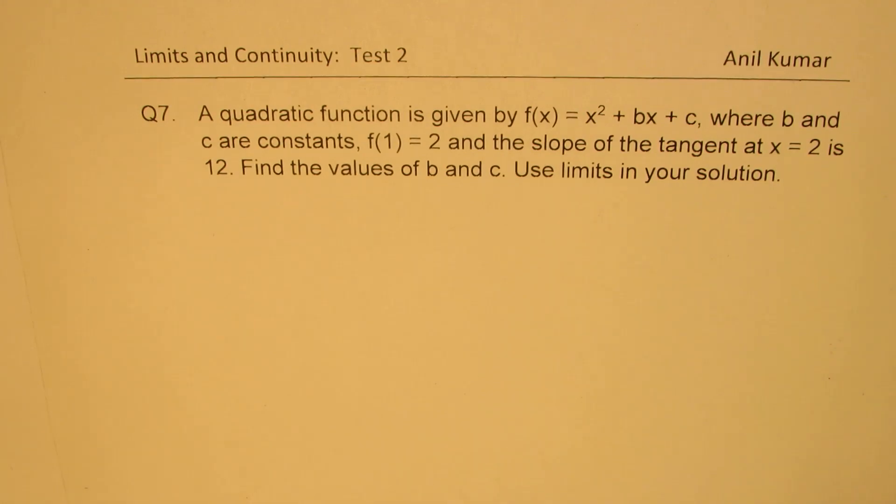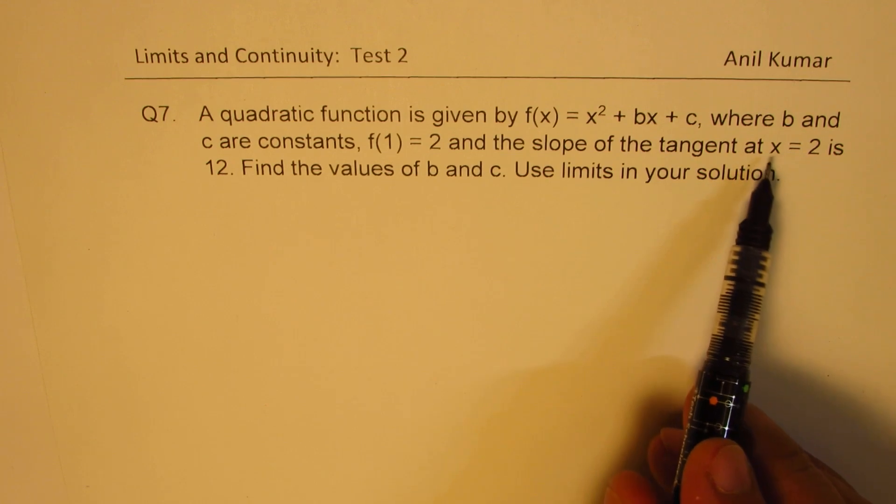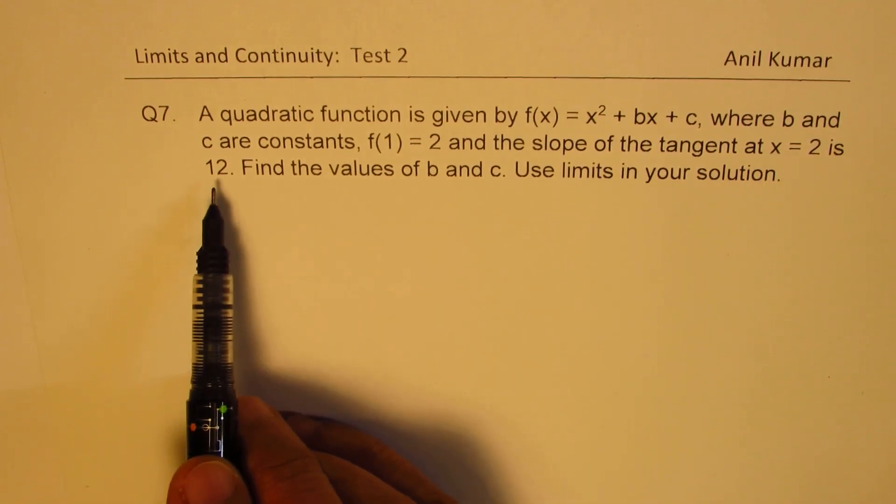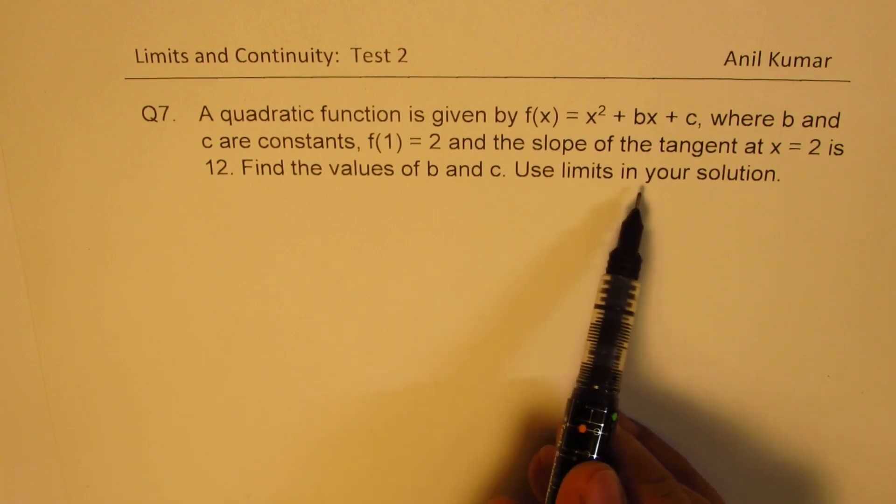The question here is: a quadratic function is given by f(x) = x² + bx + c where b and c are constants. f(1) = 2 and the slope of the tangent at x = 2 is 12. Find the values of b and c. Use limits in your solution.